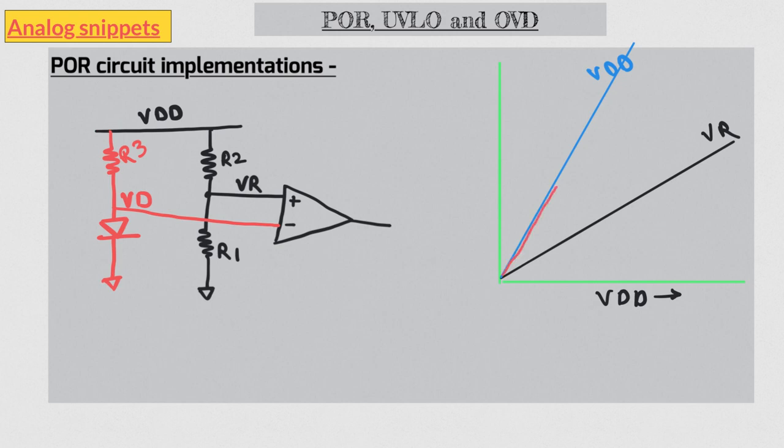But as supply keeps increasing, diode will start to conduct current, and VD will settle around diode turn-on voltage. And as supply keeps on increasing, at certain voltage VR will take over VD, and at that supply POR output will toggle from zero to one. So it is a very simple and neat way to design a POR circuit. We can easily tune the POR threshold using this resistor divider.